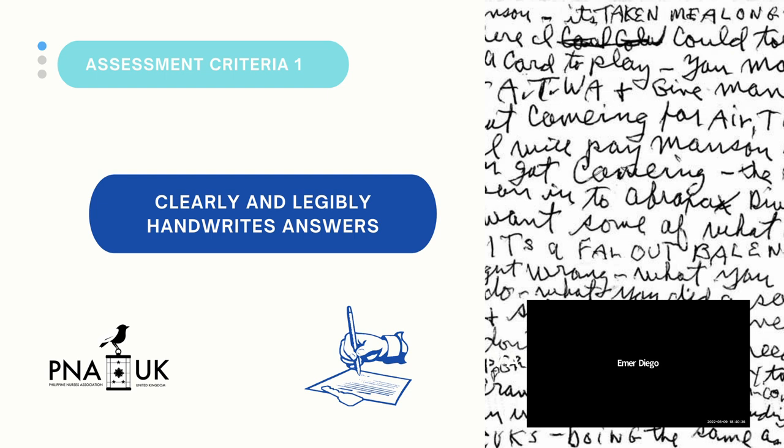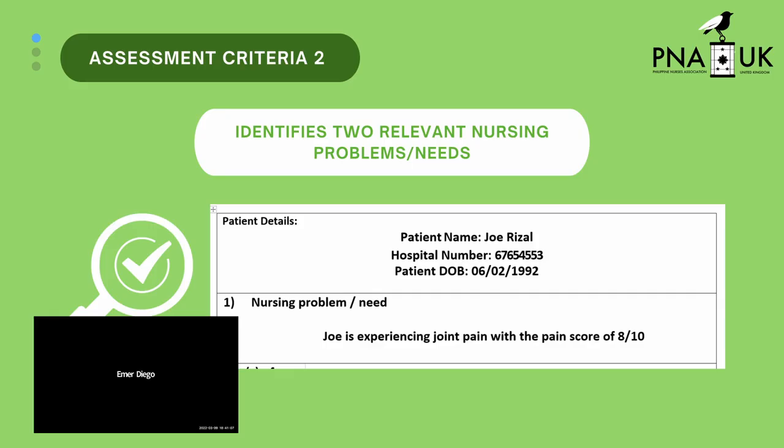The second criteria is to identify two relevant nursing problems or needs of the patient. On your care plans there are three sections and you only need to complete two care plans. If you've only identified one care plan, that will definitely result in a fail. The third page is just extra paper in case you need to rewrite, but you're only required to identify two care plans.